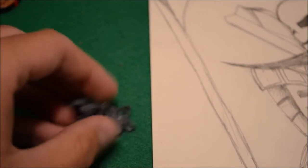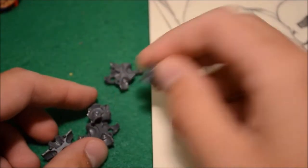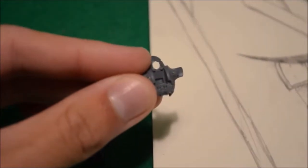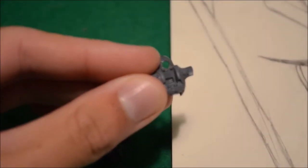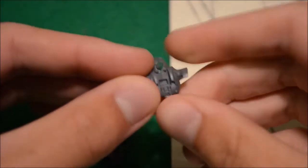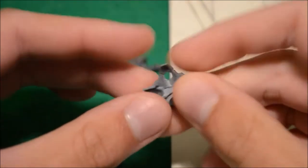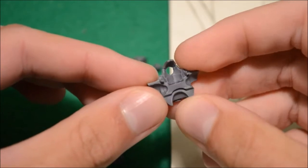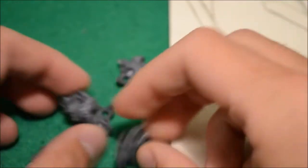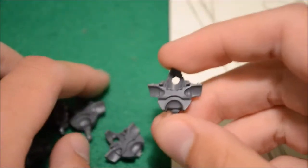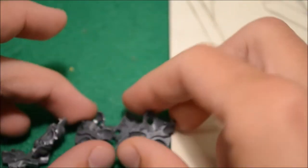I rummaged through my bits box to find what I could use. I found a bunch of Deathmark back pieces—when you get a Deathmark/Immortal box you're not going to use all the back pieces. I think these will do nicely as the back piece for a Necron Lord.